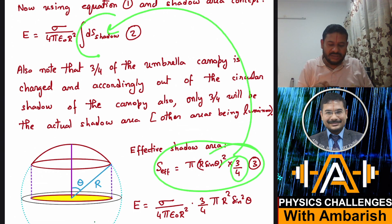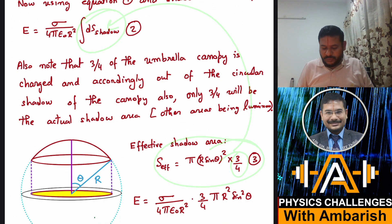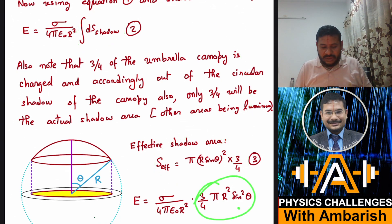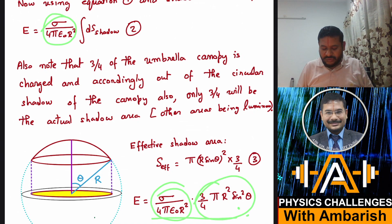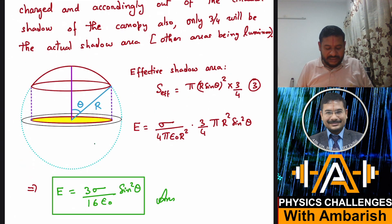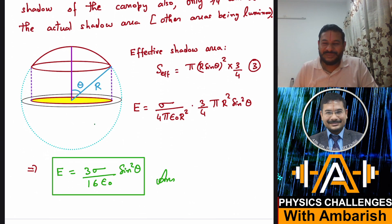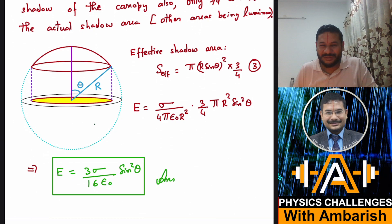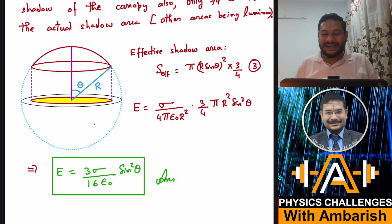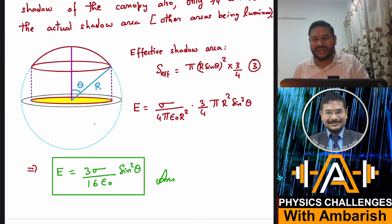Now I just put this effective shadow area into the equation. Substituting (3/4)·π·R²·sin²θ into (σ / 4πε₀r²), the R² cancels with R², π cancels with π, and you get the final answer: E = (3σ·sin²θ) / (16ε₀). That's our answer. I felt very good after making this problem and I hope you equally enjoyed the analysis.